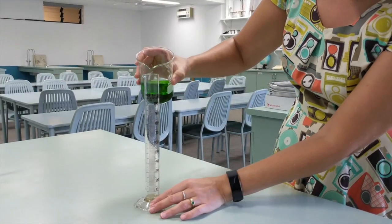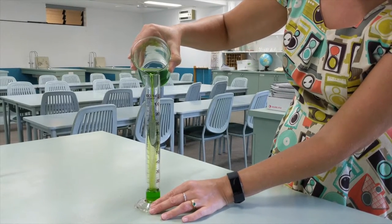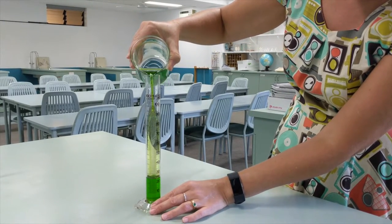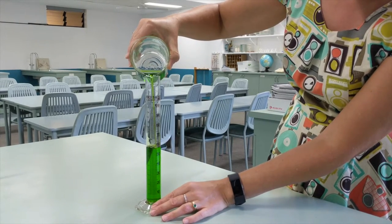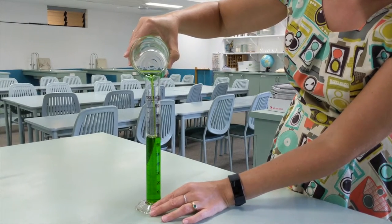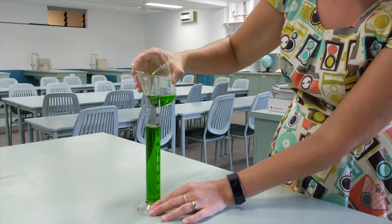Then slowly pour it into your measuring cylinder. You want to pour slowly to avoid any splashes. Pour it in until you've got about 80 mils, about the volume you want.